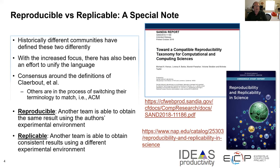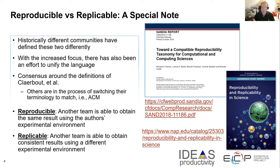I did want to say one thing with respect to the terminology. There are two specific terms that get thrown around a lot: reproducible versus replicable. There have been two different competing versions of these definitions running around for a while. The community has made a conscious effort to standardize on a set of definitions. Reproducibility means another team is able to obtain the same results using the author's experimental environment. Replicable means another team is able to obtain consistent results using a different experimental environment. Just be aware of this transition taking place in the literature.